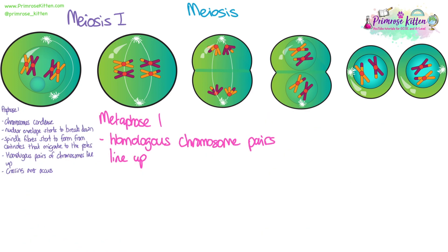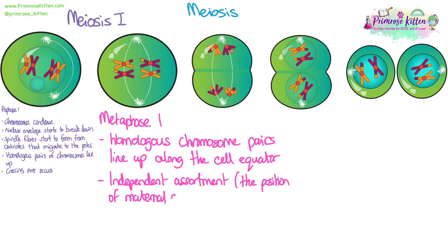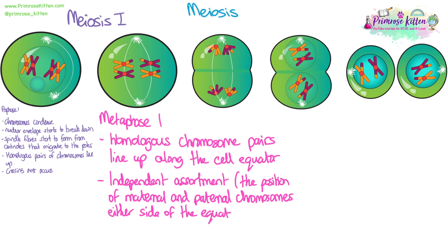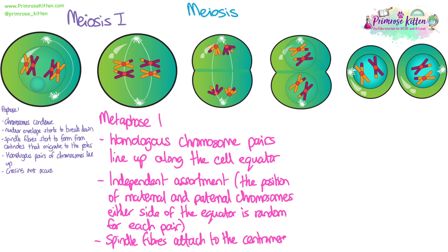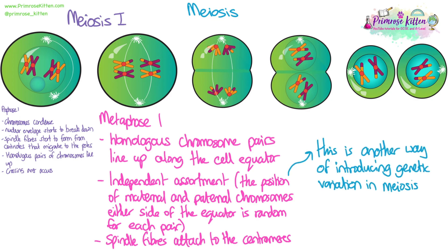On to metaphase one. The homologous chromosome pairs now line up along the equator of the cell. Independent assortment, or independent segregation, now occurs. This is where the position of the maternal and paternal chromosomes either side of the equator is decided at random. On the diagram, there is a parent one chromosome at the top for the first pair and the parent one chromosome on the bottom for the other pair. The top row moves up towards the top pole and the bottom row moves to the bottom pole, ending up in separate gametes. Because this positioning is random, a random mix of paternal and maternal chromosome copies will end up in each gamete. Spindle fibres attach at the centromere of each chromosome. Independent assortment, alongside crossing over, is another key way of introducing genetic variation in meiosis.